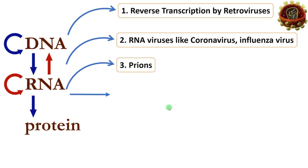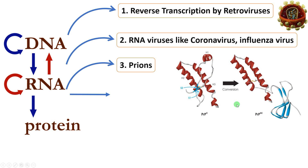The third exception is prions. Prions are proteinaceous infectious particles that cause neurodegenerative diseases like mad cow disease, scrapie disease, CJD disease, etc. There is the normal cellular prion protein (PrPC) and the misfolded scrapie prion protein (PrPSc). This misfolding of the normal cellular protein forms the scrapie protein, which accumulates and ultimately causes killing of neurons. Prions can replicate themselves without the involvement of RNA or DNA.